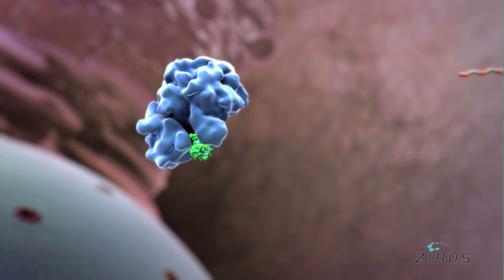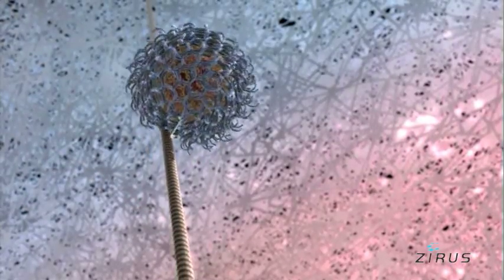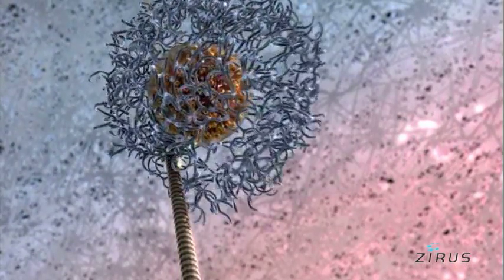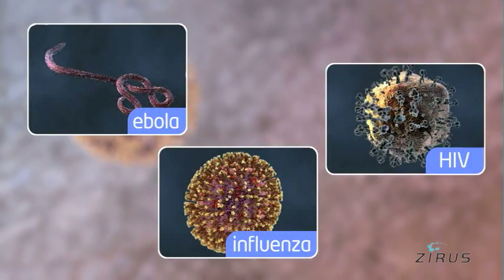Significantly, many of our targets can be utilized to block several different types of viruses. For example, based on in vitro data, blocking a single Zyrus gene target can block Ebola, influenza, and HIV.